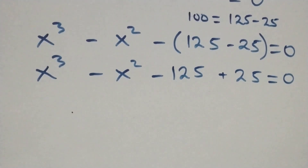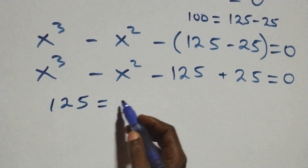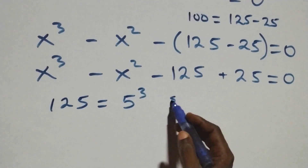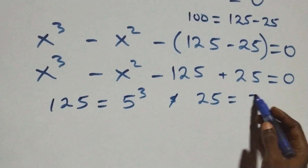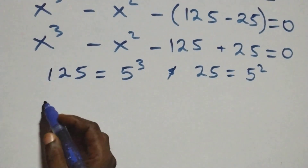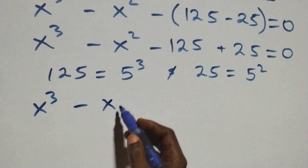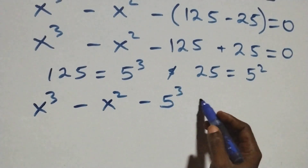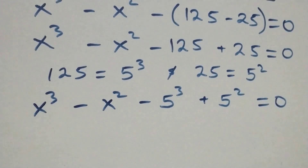We can write 125 as 5 times 5 times 5, which is 5 cubed, and 25 as 5 times 5, which is 5 squared. This equation becomes x cubed minus x squared minus 5 cubed plus 5 squared equals zero.